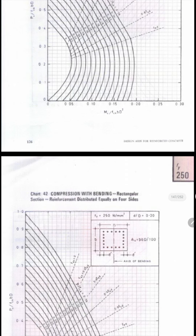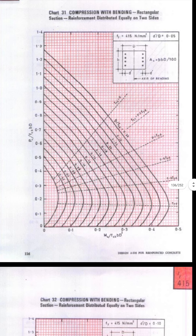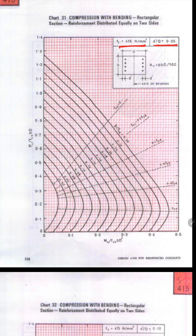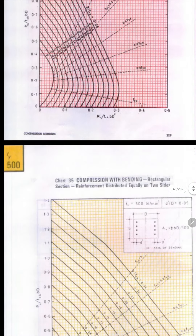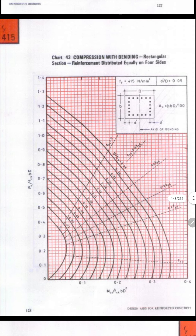I will take two examples. First, chart number 31 — this is Fe 415 steel, d'/d = 0.05, and reinforcement is distributed on two sides. In a similar way, there is another chart for Fe 415 and d'/d = 0.05 — chart number 43. Chart number 43 also uses Fe 415 and d'/d = 0.05, but the only difference is that here reinforcement is distributed equally on four sides — you can see all four sides.